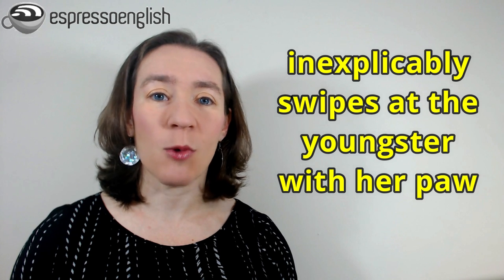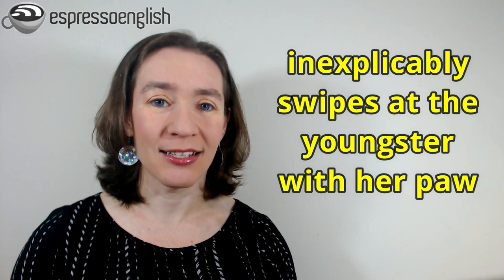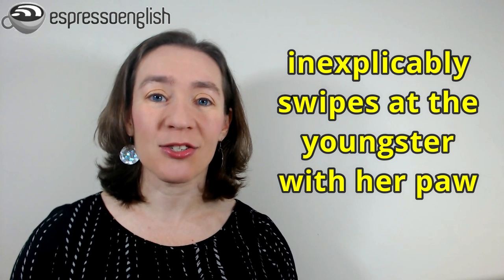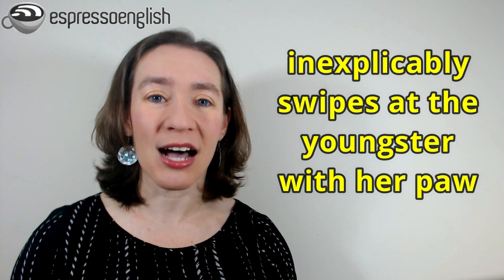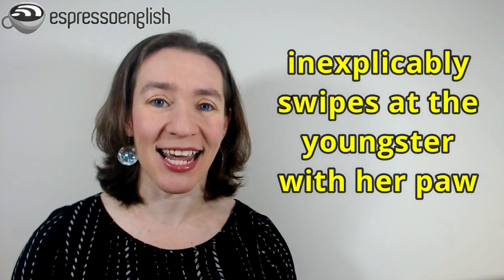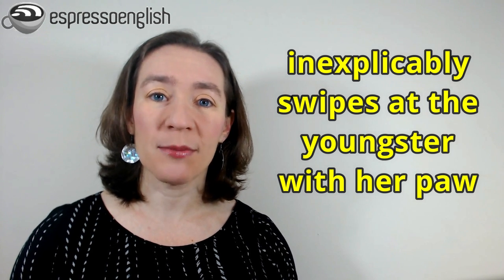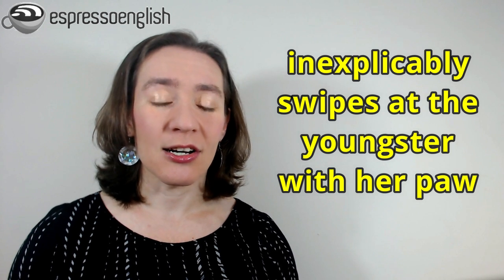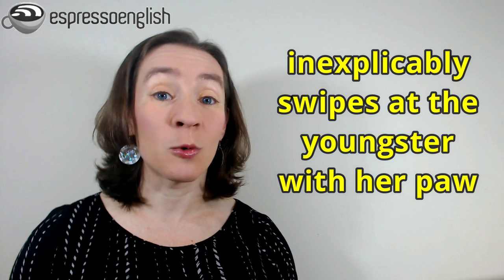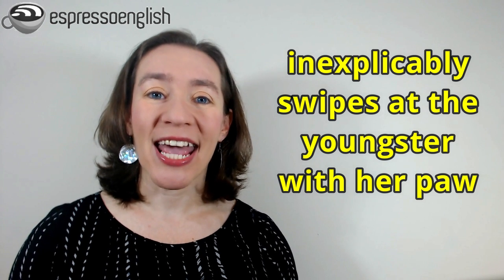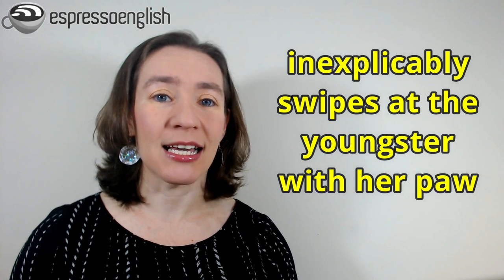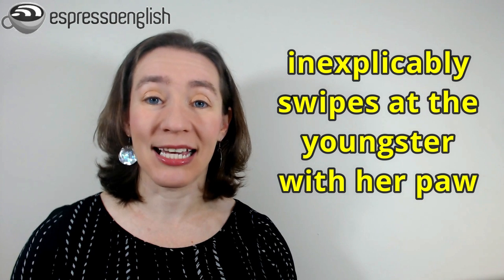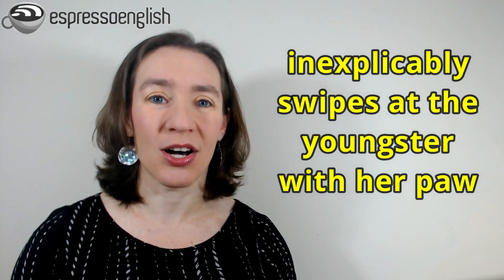The cub almost reaches the top, but its mother inexplicably swipes at the youngster with her paw. Inexplicably describes something that is difficult or impossible to explain or understand. The verb swipes refers to a quick sideways motion. Youngster is an informal word for someone who is young, and the hands and feet of an animal like a cat, dog, bear, lion, etc., are called paws.